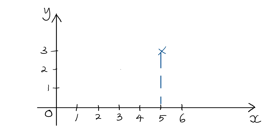I have a point indicated on the screen. I have drawn some dotted lines — vertical dotted lines — from the point touching the x-axis. The horizontal distance of the point from the y-axis will be 5 units. Therefore, the x-coordinate of the point will be 5.